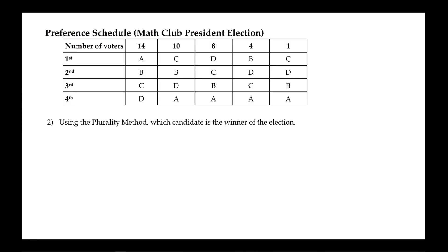Using the plurality method, we need to find out how many first place votes each of the candidates received. For Anna, she only received first place votes from one pile, and she received 14 first place votes. For Bob, he also only received first place votes from one pile, and that's going to be four. For Cora, she received 10 first place votes in one pile and one first place vote in another pile, so combined she received 11 first place votes. And finally, Dan received first place votes from one pile only, and he received eight first place votes.